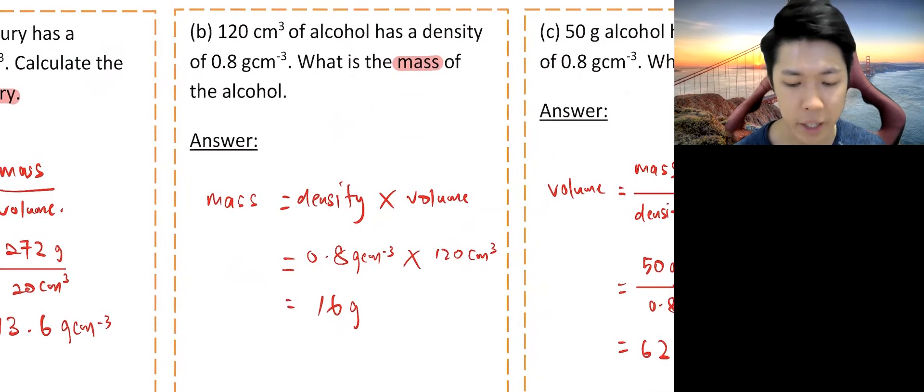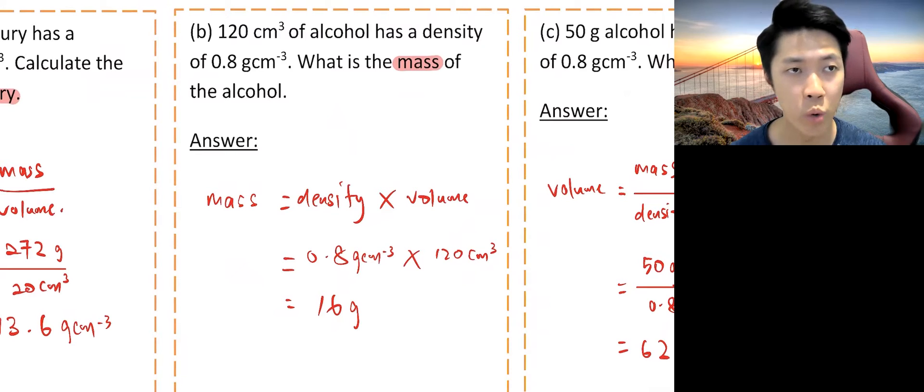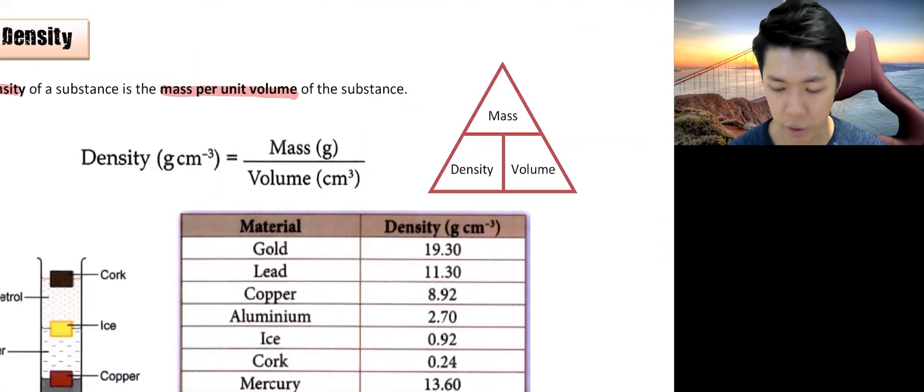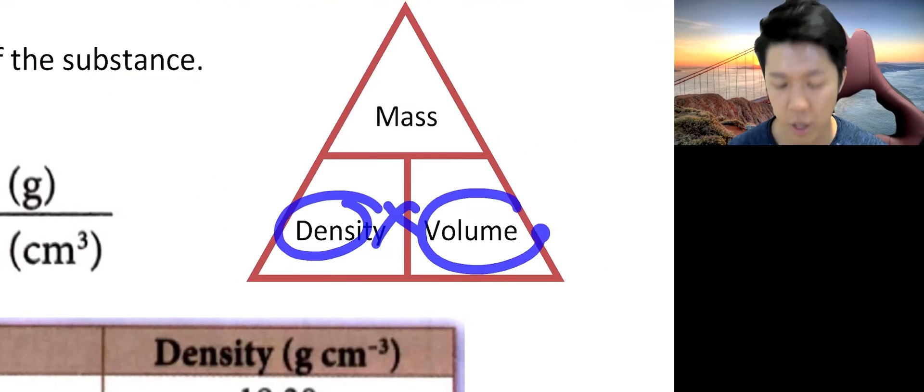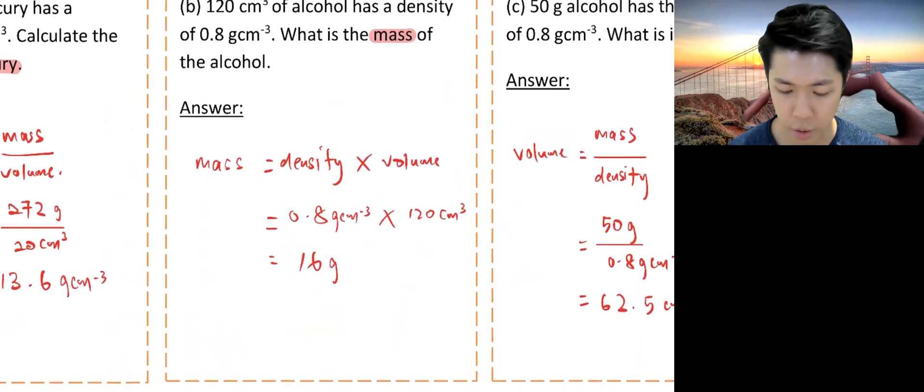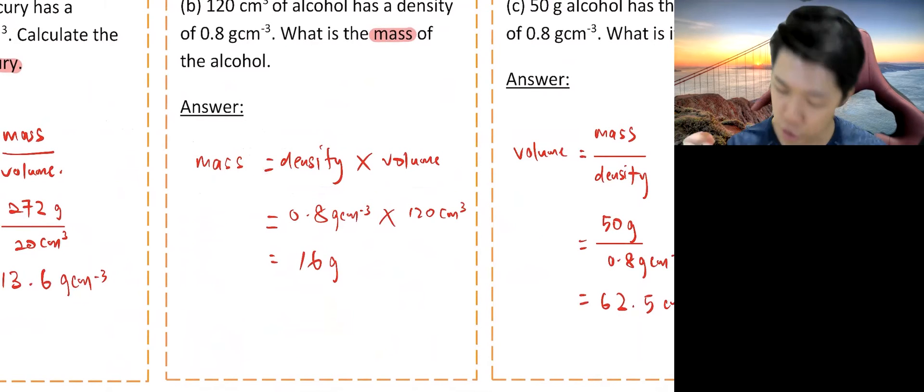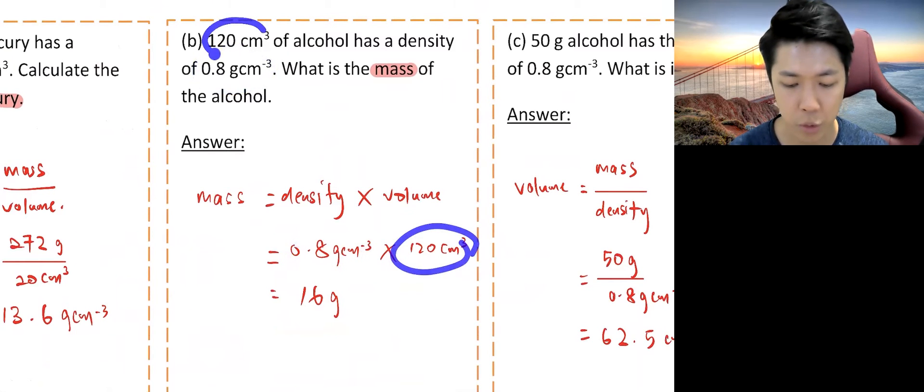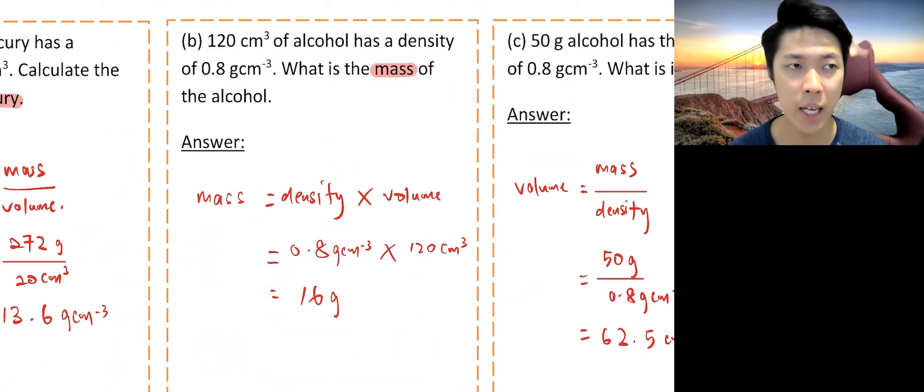Second example. 120 cm³ of alcohol has the density of 0.8. So you are looking for mass. So mass formula, if you're not familiar, don't worry. You have your triangle. So mass, which is what you're looking for, equals the density times volume. Let's go. So bring it down. Density times volume. Throw in your number. 0.8, that's your density. 120 cm³, that's your volume. And 16 grams as your unit.